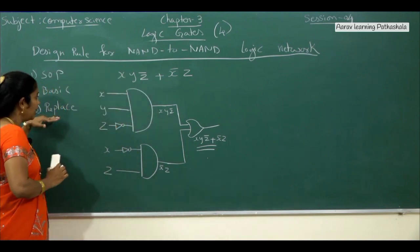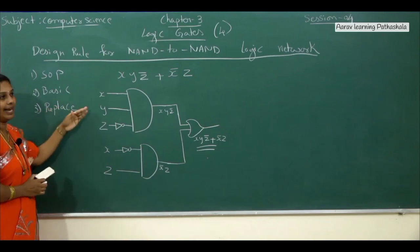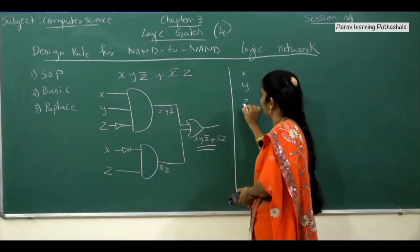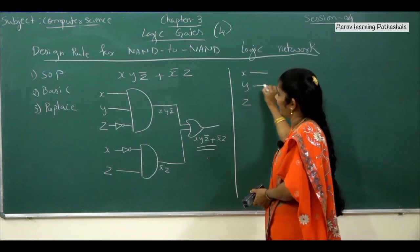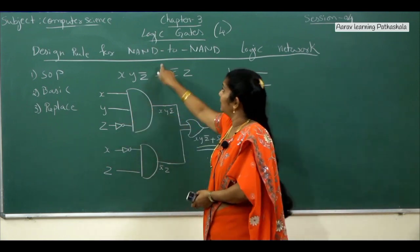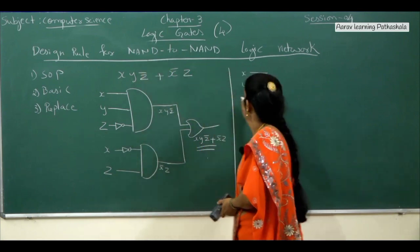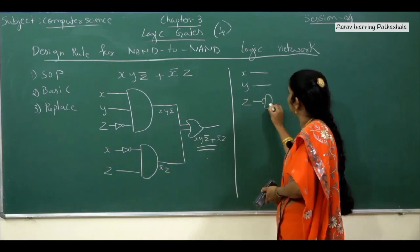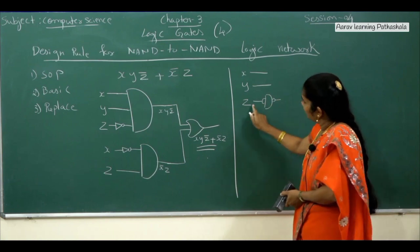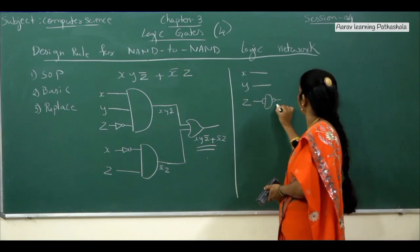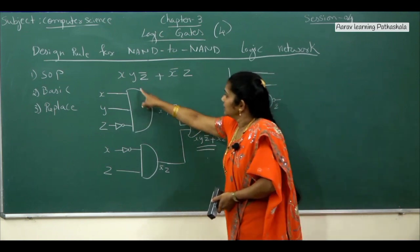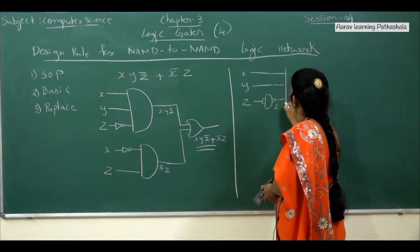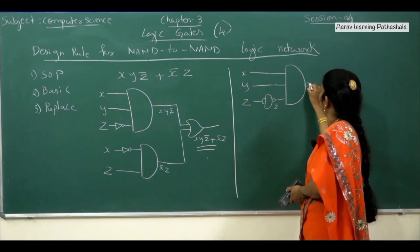The third step: replace all basic gates with NAND gates. Take X, Y, and Z as inputs. X and Y remain as-is, but we require Z̄. For NOT using a NAND gate, minimum two inputs are required, so connect both inputs to Z — D-shape with a circle at the end — the output is Z̄. Then for the AND gate connecting X, Y, and Z̄, replace it with a NAND symbol — D-shape with a circle at the end.